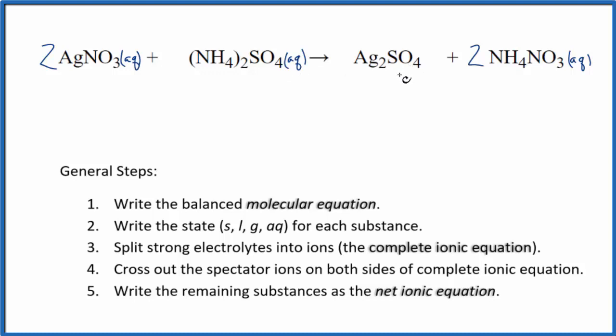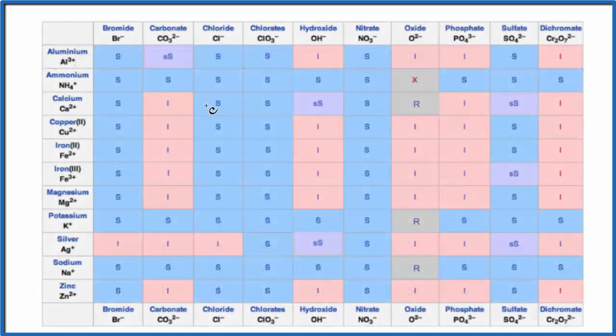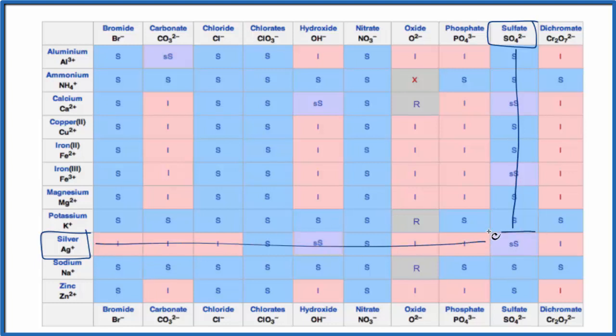Sulfate compounds tend to be soluble, but we should probably look this one up. Silver is kind of a strange one. You want to be cautious with that. So we're looking for silver sulfate. We find silver right here, and then way over here is the sulfate. You see most of them are S. If we go down right here, silver sulfate, we have SS.